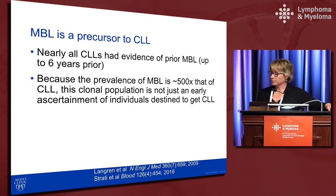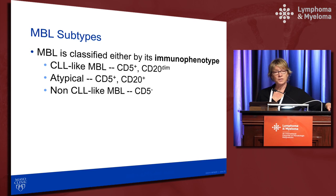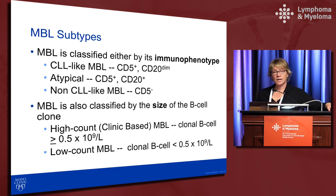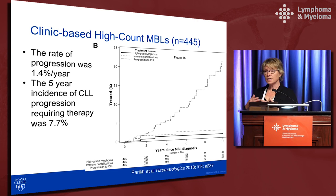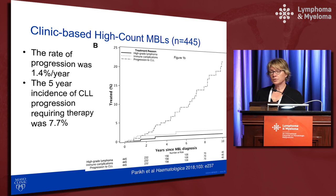MBL has various subtypes defined by immunophenotype or clonal size. High-count MBL is defined as clonal counts of 0.5×10⁹ cells per liter or above; low-count is below this threshold. Colleague Samir Parikh studied 445 high-count MBLs — individuals presenting with lymphocytosis who were screened by flow cytometry. The rate of progression from high-count MBL to CLL requiring therapy is about 1.4% per year, with a five-year incidence of 7.7%.